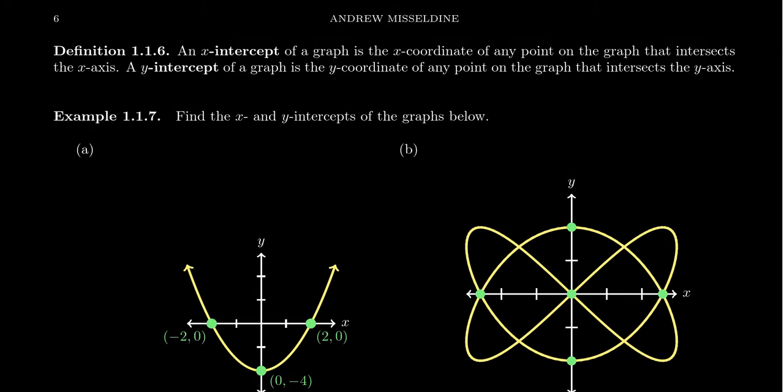Let's talk about intercepts for a function. There are two types of intercepts: x-intercepts and y-intercepts. An x-intercept for a graph is the x-coordinate of any point on that graph that intersects the x-axis, which is what the word intercept means - where you're intersecting the x-axis.